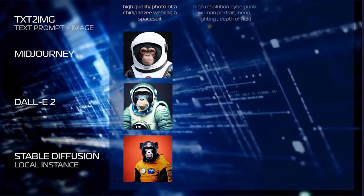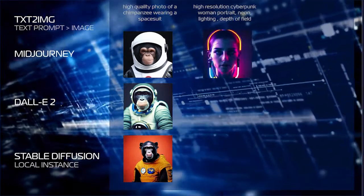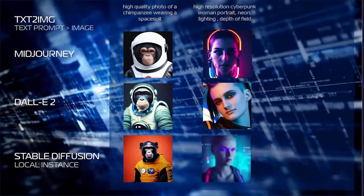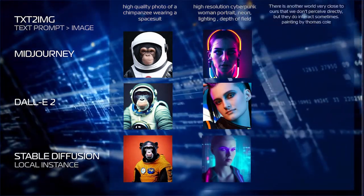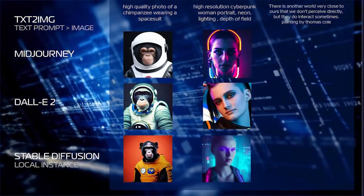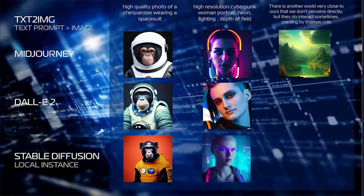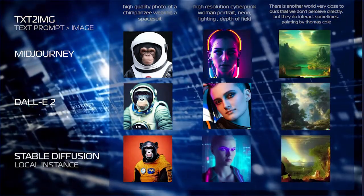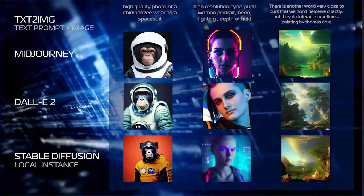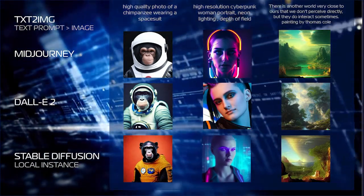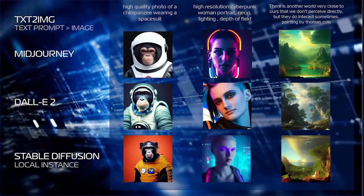Here's another example: 'high-resolution cyberpunk woman portrait, neon lighting, depth of field.' You can use entire sentences and concepts within prompts, such as 'There is another world very close to ours that we do not perceive directly, but they do interact sometimes — painting by Thomas Cole.' As you can see, we can use sentences, concepts, different kinds of lighting, focal lengths, artist names, and genre labels — all of these things can be used for prompt making.